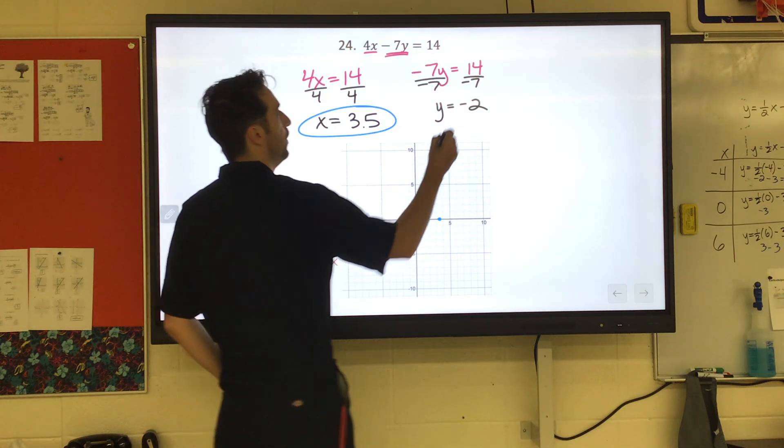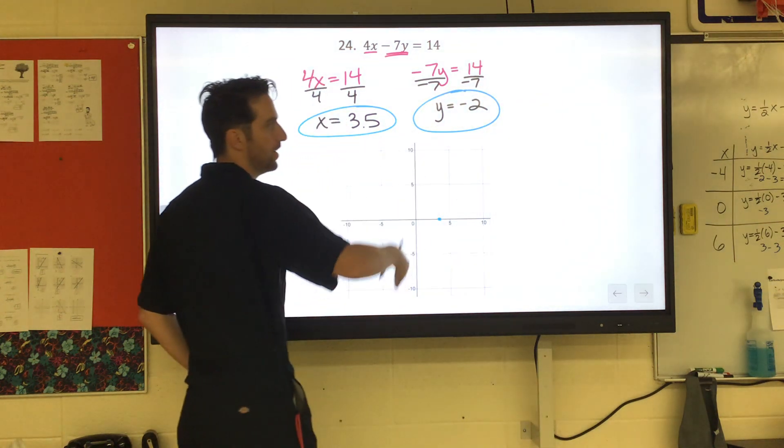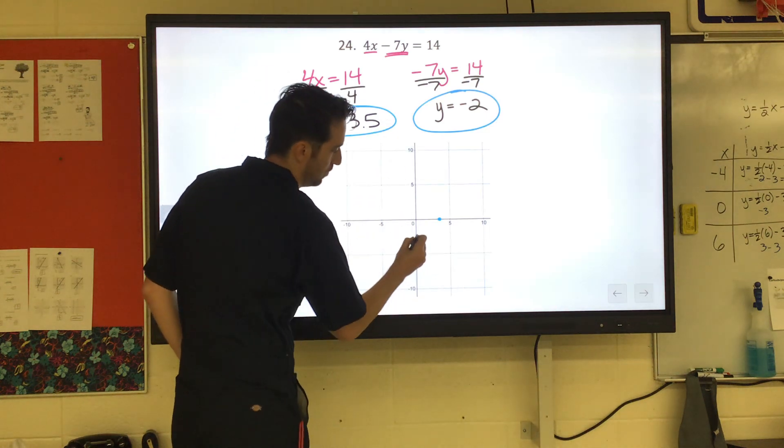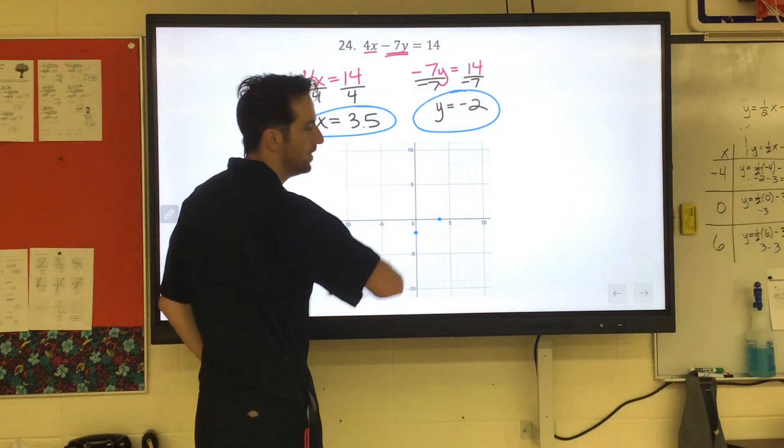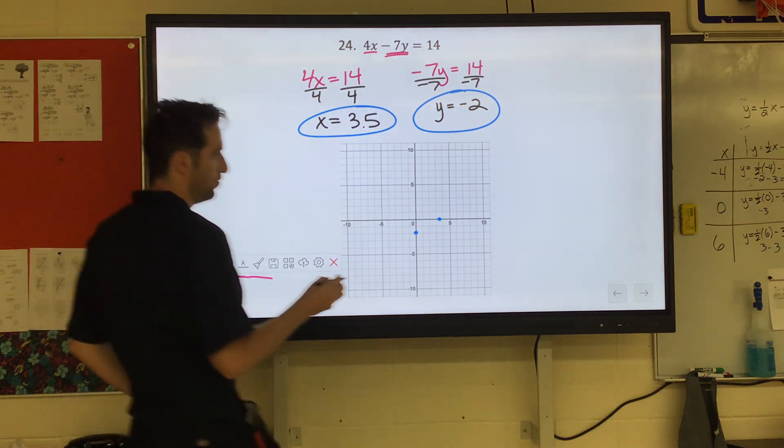It's telling us that the y-intercept, the up and down axis, is at negative 2. That would just be down 2. And then we draw our straight line through these two points.